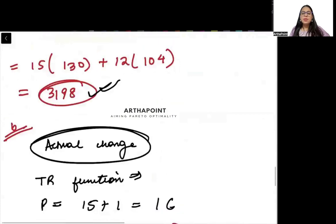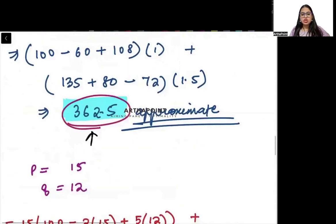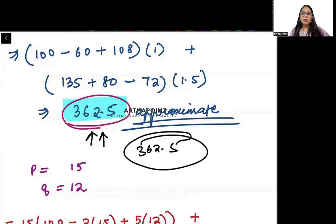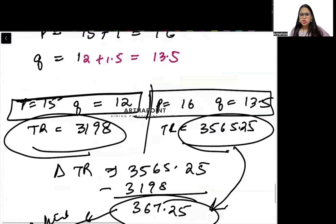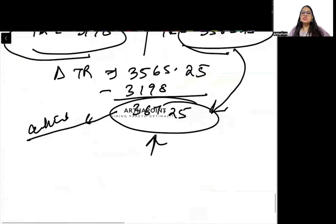When we used differentiation method, we got an approximate change in total revenue of 362.5, but actually it is changing by 367.25. That's the difference. This is a complete question on differentiation of several variables. Thank you beta.